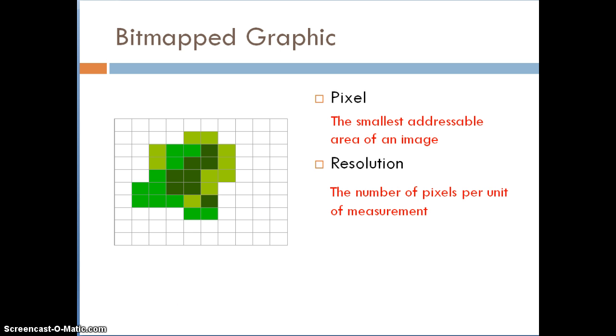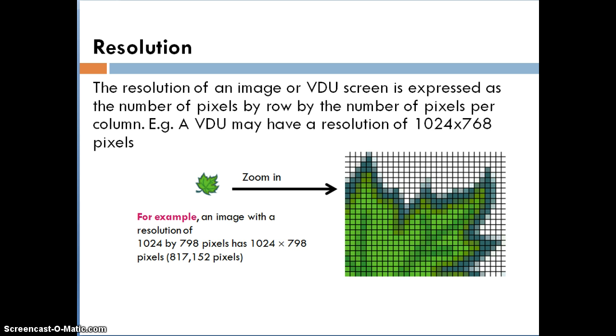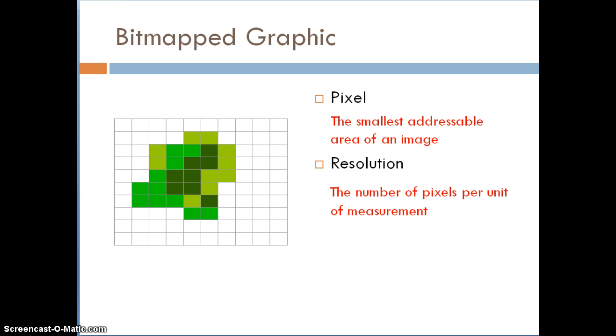We usually represent the resolution of an image or the VDU screen as the number of pixels by row by the number of pixels per column. For example, a visual display unit may have a resolution of 1024 by 768. What that means is it has 1024 pixels across and 768 down. The definition we use though is the number of pixels per unit of measurement.